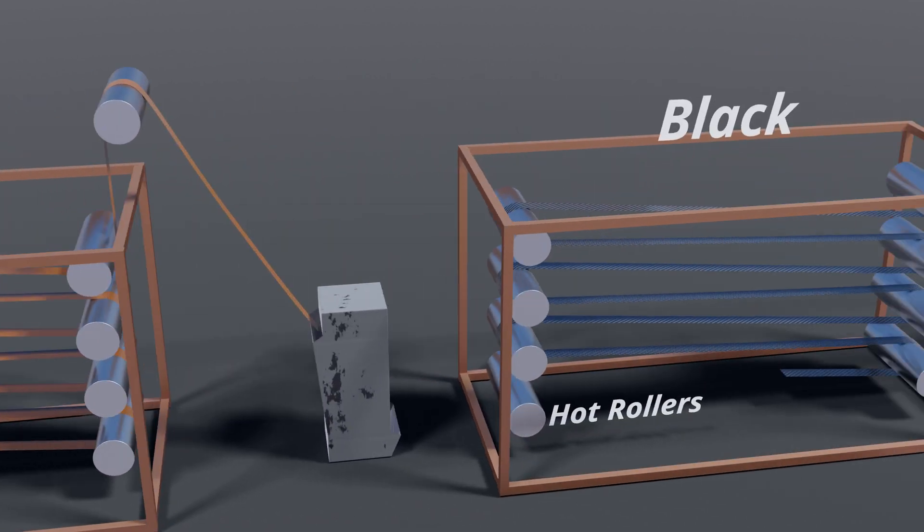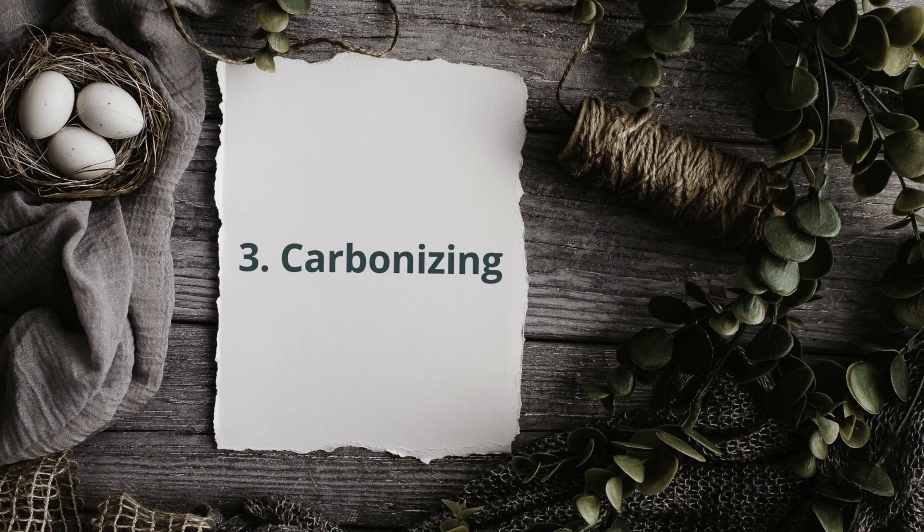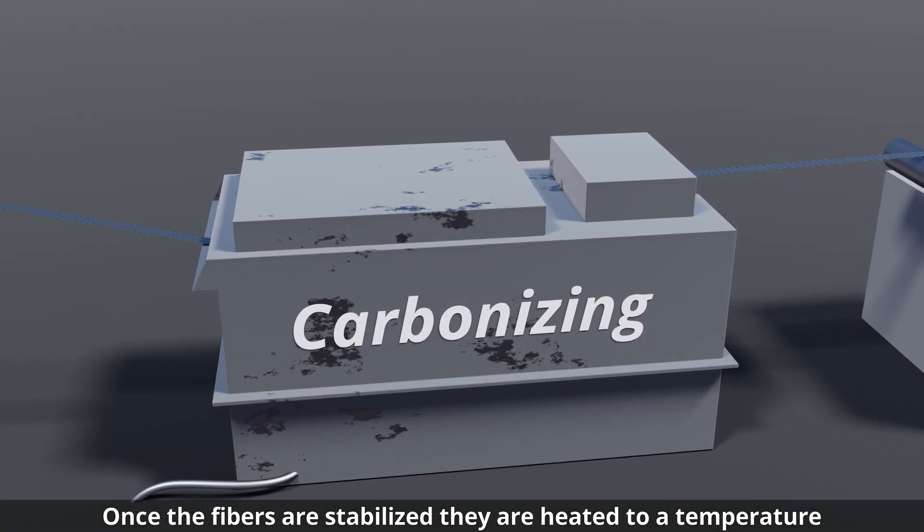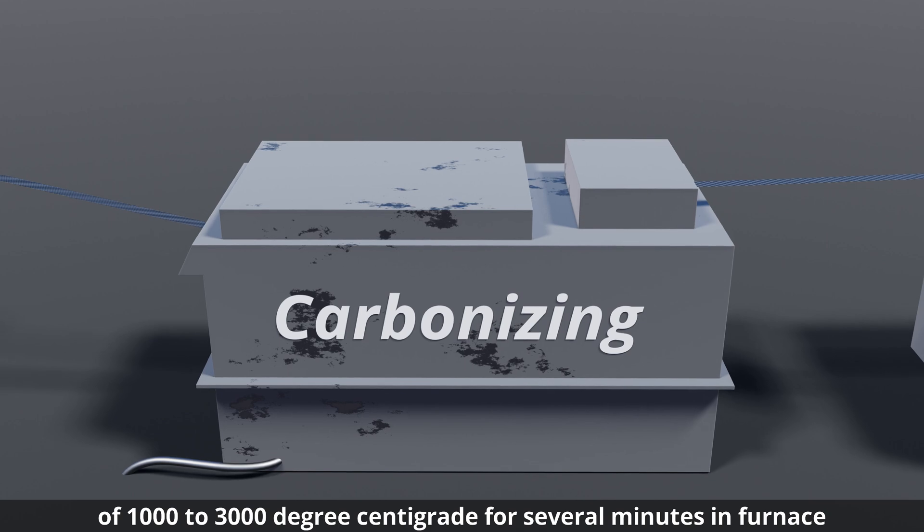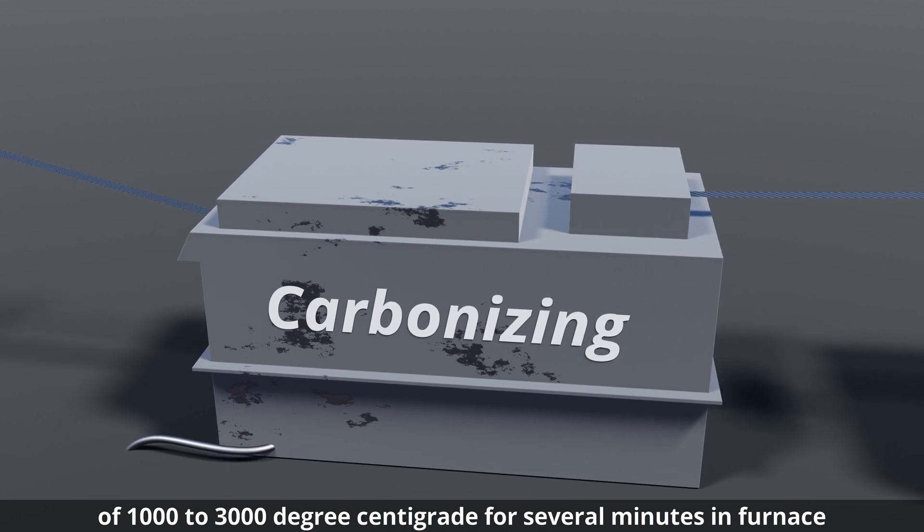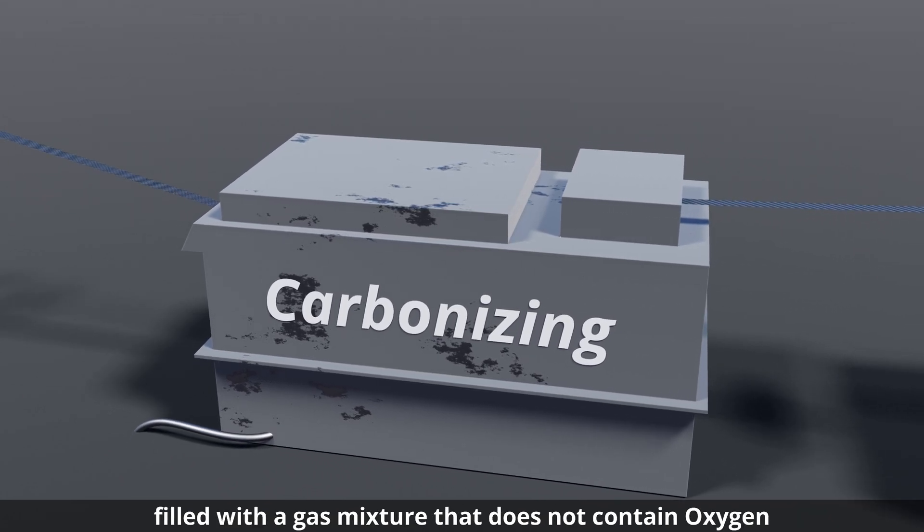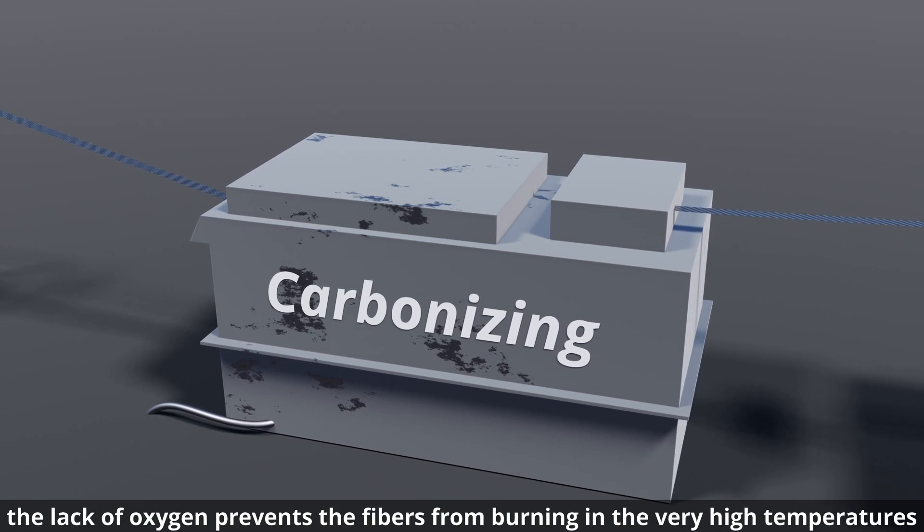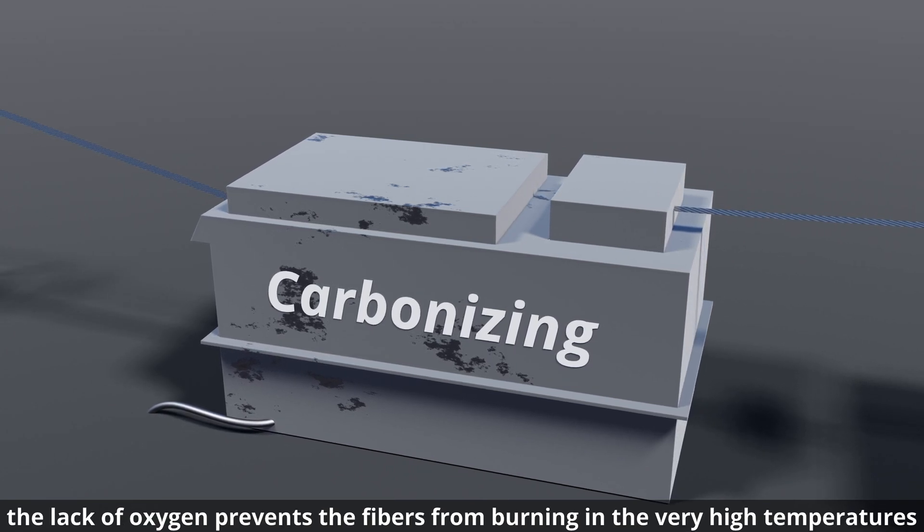In the carbonizing process, once the fibers are stabilized, they are heated to a temperature of 1000 to 3000 degrees centigrade for several minutes in a furnace filled with a gas mixture that does not contain oxygen. The lack of oxygen prevents the fibers from burning in very high temperatures.